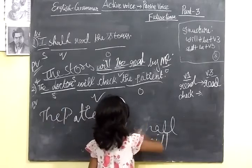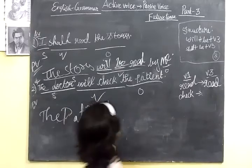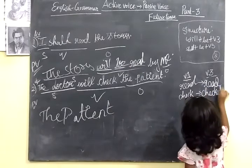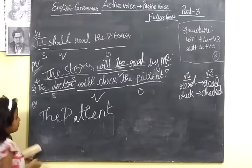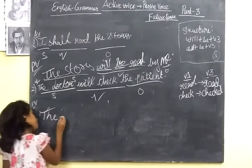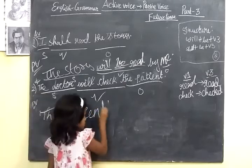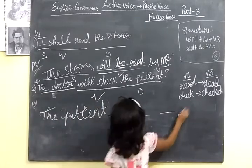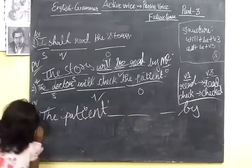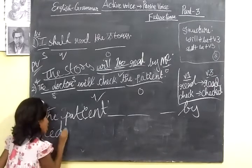You must use the third form of 'check,' which is 'checked.' So the passive becomes: 'The patient will be checked by the doctor.' The doctor moves to the object position, preceded by 'by'.